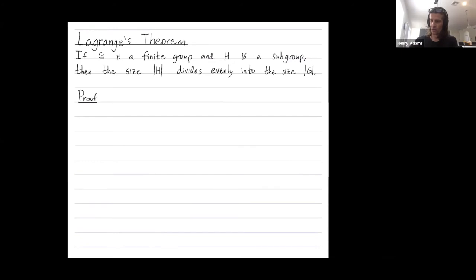Okay, so we're going to prove this using cosets. So let A1H, A2H, dot dot dot, all the way up to ARH be the distinct left cosets of our subgroup H inside of the larger group G.